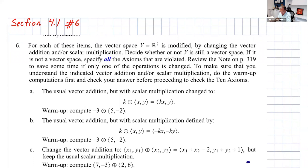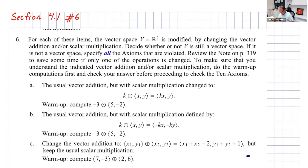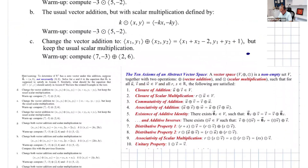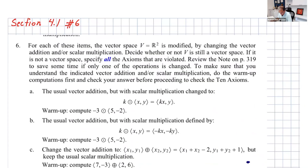Welcome, everyone. In this video, I'm going to go over problem number 6, section 4.1. There are a lot of them, but we're going to try probably four of those so you can get an idea and then do the rest. For each of these items, the vector space V equals R-squared is modified by changing the vector addition and/or scalar multiplication. Decide whether or not we still have a vector space. If not, specify all the axioms that are violated. But even if one axiom is violated, you can stop right there and say it's not a vector space.